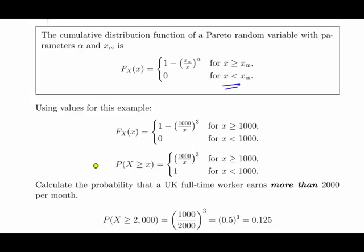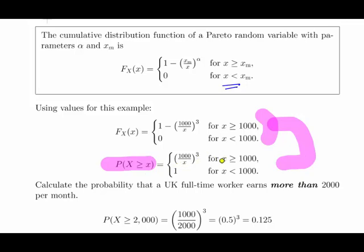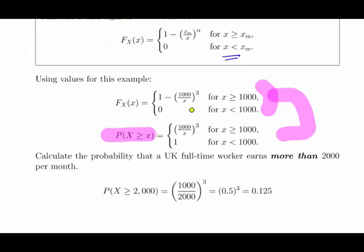Using the survivor function — the probability of X greater than x — we can rewrite the expression as: 1,000 divided by X to the power of 3, for X greater than 1,000; and 1 for X less than 1,000. Note that the 0 in the CDF becomes a 1 in the survivor function, which makes sense: the probability of exceeding the minimum is 1.